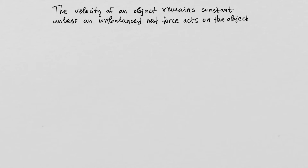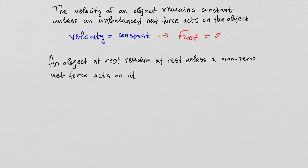The most important point is that constant velocity equals no net force acting on the object. For the second part of the first law: an object at rest remains at rest unless a non-zero net force acts on it. This is intuitive from everyday experience — your cell phone resting on a table will not move on its own unless you apply a non-zero net force to it.